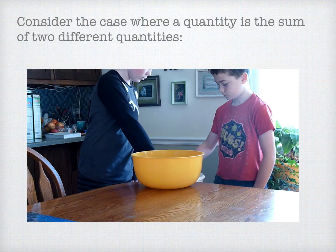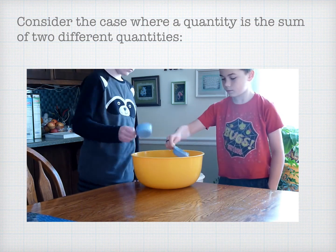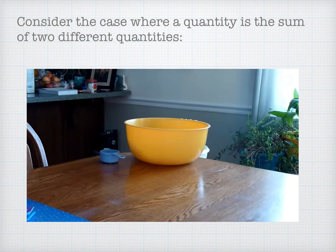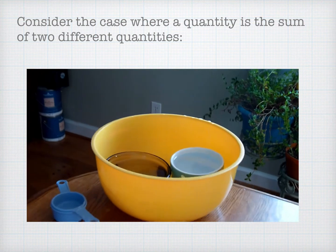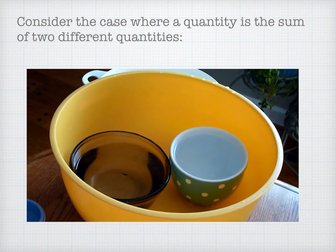Let's start by considering the case where a quantity is the sum of two different quantities. Here I have two individuals adding water to a pool. Notice that they're pouring at different rates. If I look at the total, I can imagine that it's made up of components coming from each of the individual's contributions. In other words, the total amount of water is the sum of the water added by each individual.